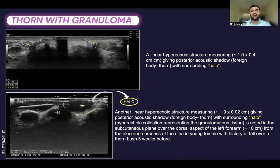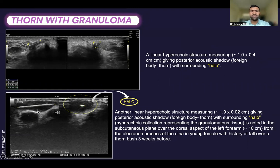The second case is of a thorn with granuloma formation. We can appreciate a linear hyperechoic structure measuring approximately one centimeter, giving posterior acoustic shadow with surrounding halo. This halo is a hypoechoic collection representing granuloma tissue, noted in the subcutaneous plane over the dorsal aspect of the left forearm approximately 10 centimeters from the olecranon process of the ulna in a young female with a history of fall over a thorn bush three weeks ago.